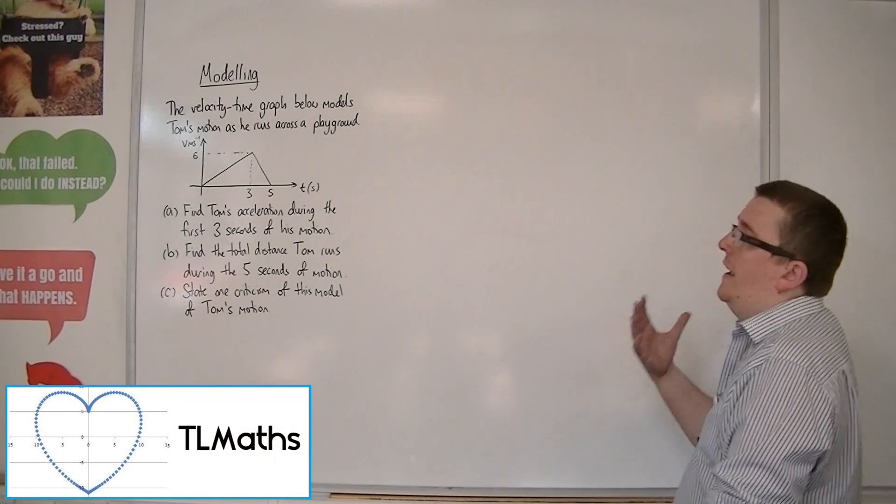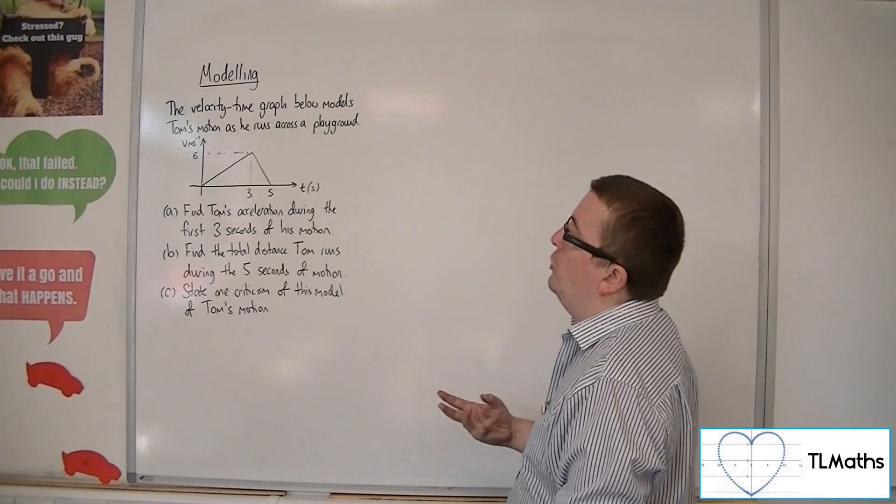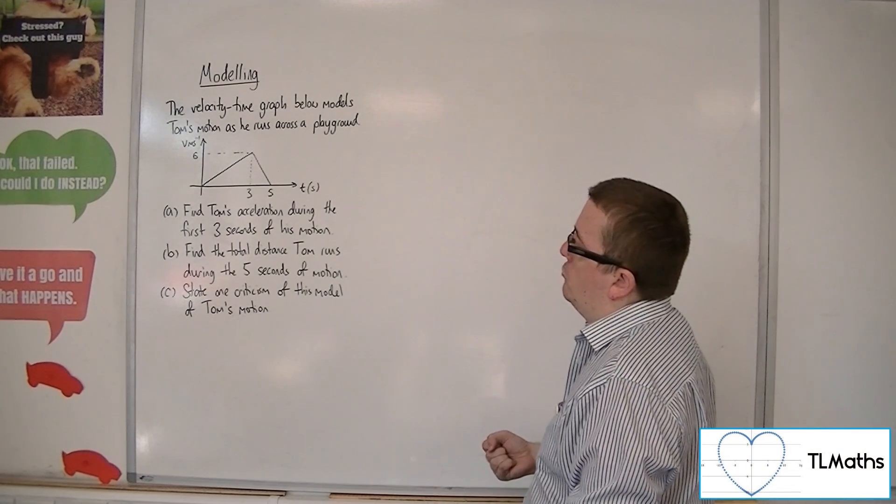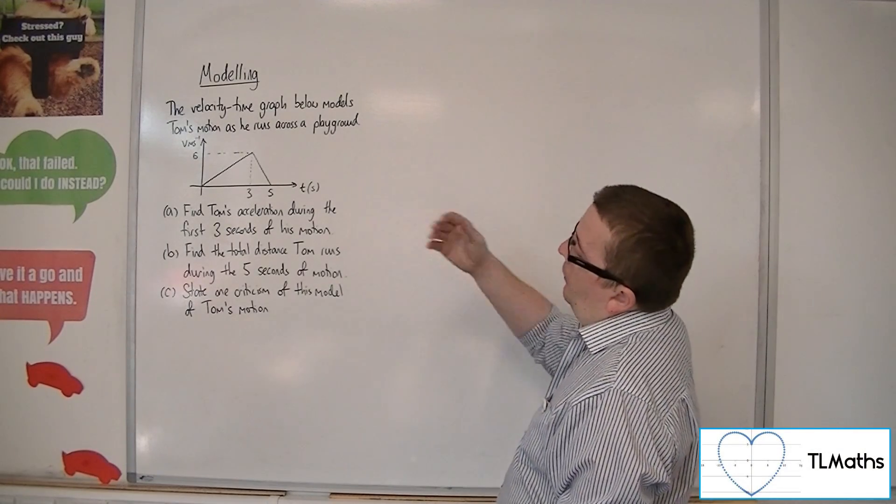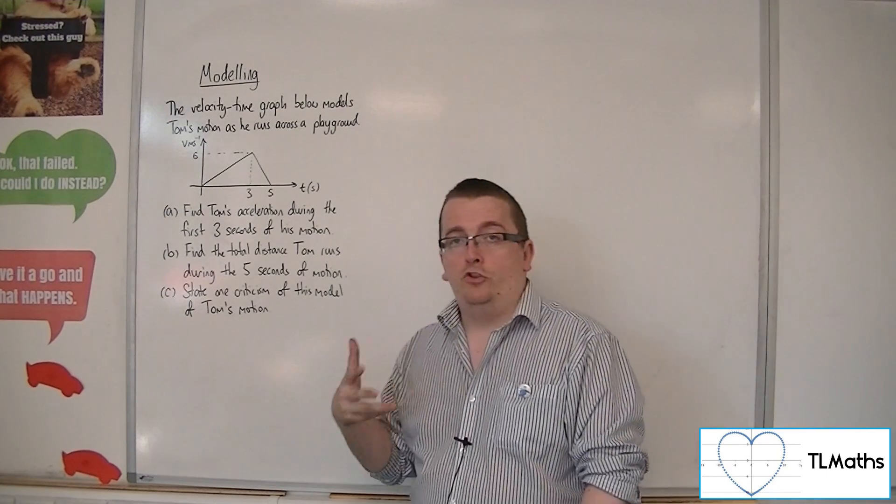So in this problem, we have a velocity time graph that models Tom's motion as he runs across a playground.